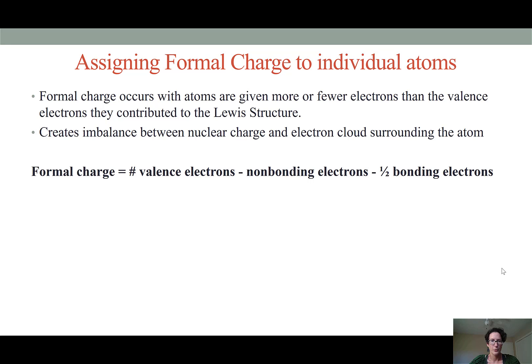Formal charge is equal to the number of valence electrons that atom would have according to the periodic table minus any non-bonding or lone pair electrons minus half of the bonding electrons that it has around it.